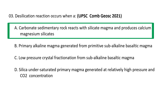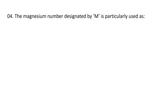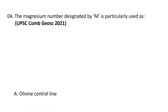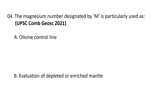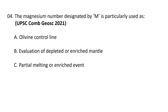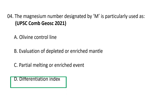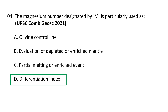Question 4: The magnesium number designated by M is particularly used as: (a) a polyvin control line, (b) evaluation of depleted or enriched mantle, (c) partial melting or enriched event, or (d) differentiation index. The correct option is D — differentiation index. The differentiation index is the sum of the weight percentages of normative quartz, orthoclase, albite, nepheline, leucite, and calcilite.